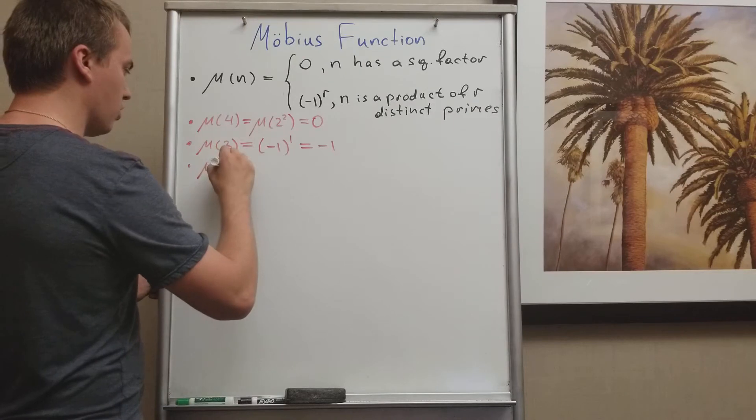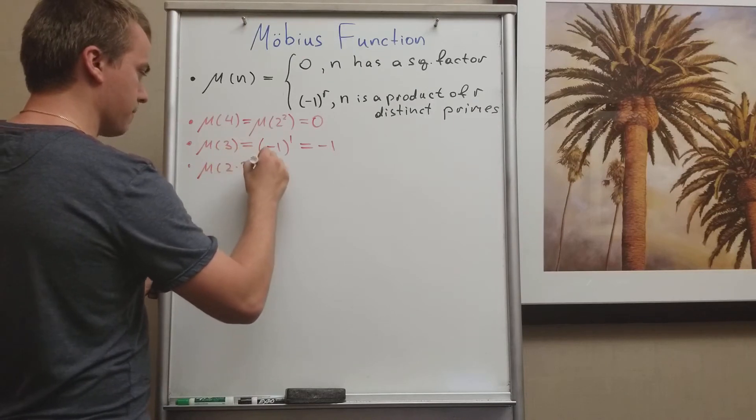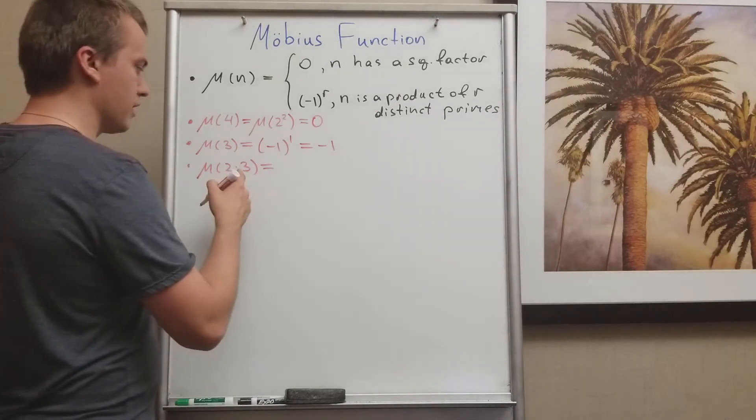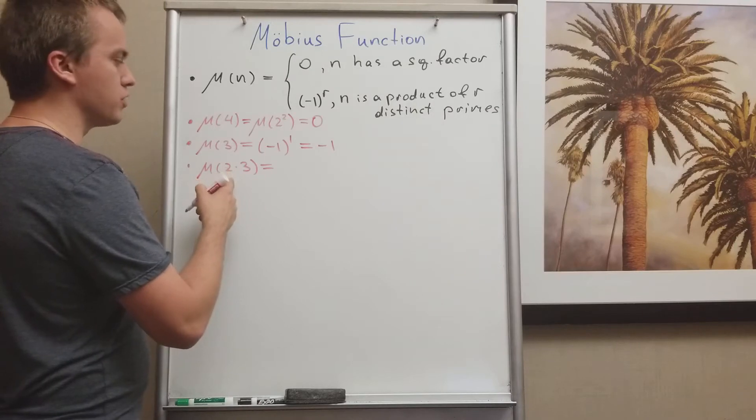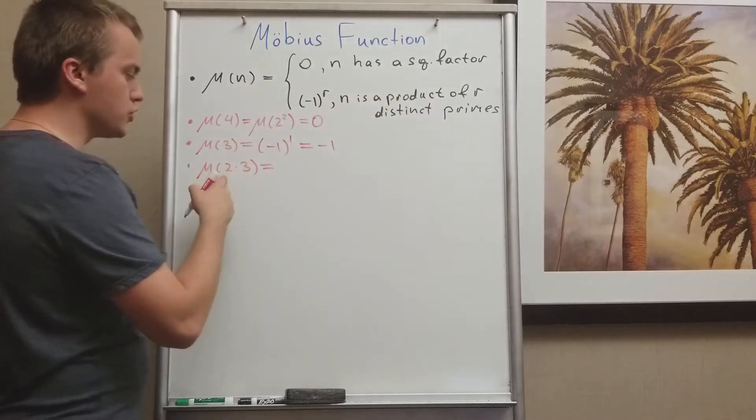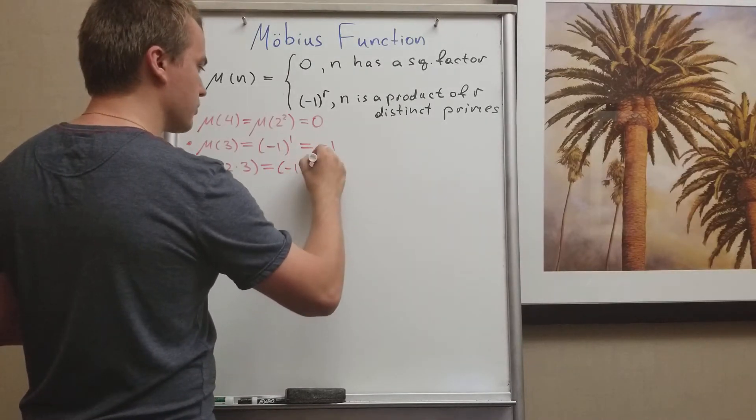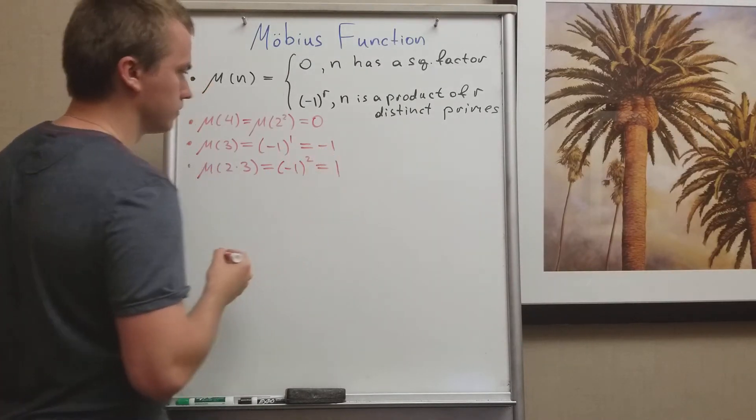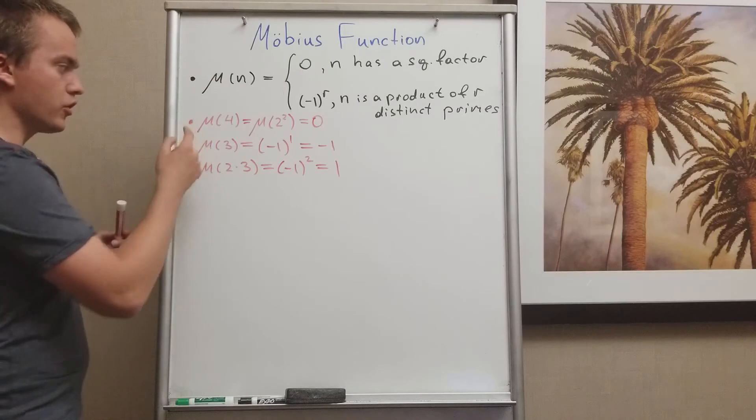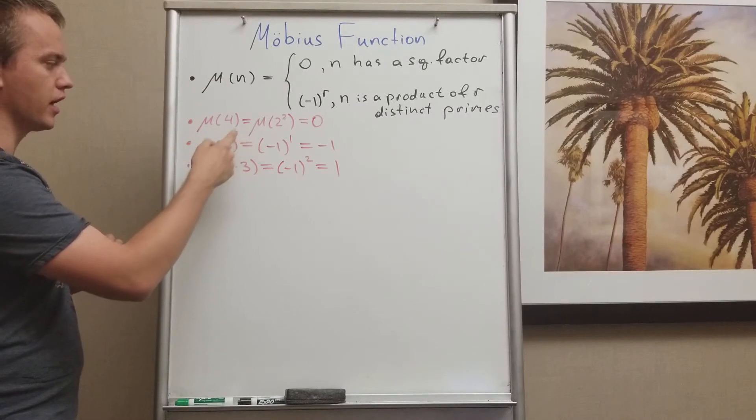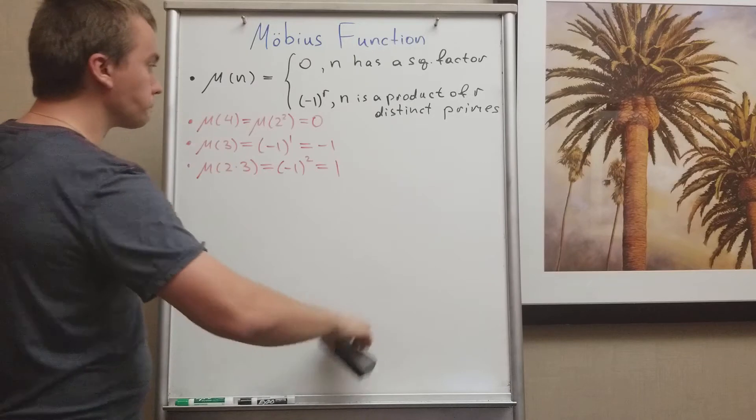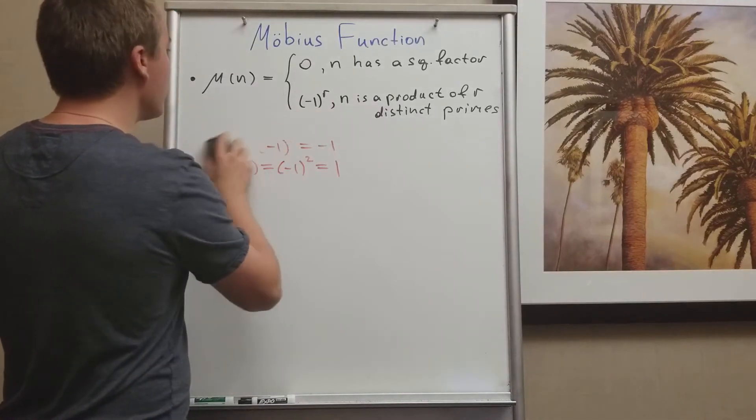Okay, and let's take the Möbius function of 2 times 3. In this case I will get that my input is a product of two distinct prime numbers, so it equals to (-1)² which equals 1. Okay, so you can see with these different inputs you're gonna get different outputs.